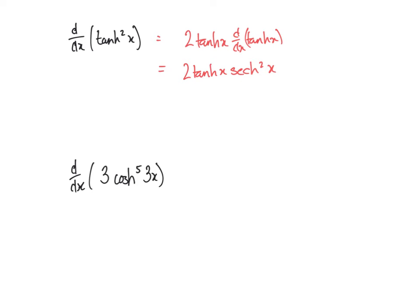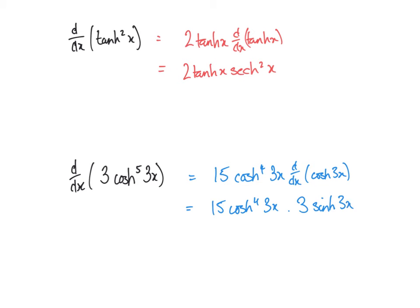For differentiating cosh to the power of 5 of 3x, there's a function of a function involved. First, differentiating cosh to the power of 5 gives 5 cosh to the power of 4 of 3x. Then we multiply by the differential of cosh 3x, which is itself a chain rule giving 3 sinh 3x. Putting it all together, we get 15 cosh to the power of 4 of 3x times 3 sinh 3x, which gives 45 cosh to the power of 4 of 3x times sinh 3x.